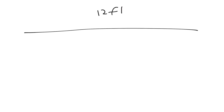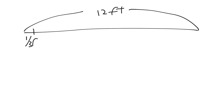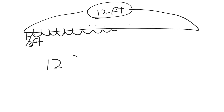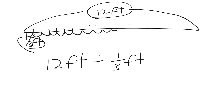From the visual side, you can see we have a 12-foot rope. And we want to divide it into one-third of a foot pieces, like so — and there will be many more. We want to know how many one-third-foot pieces there are. So to do that, we would take the 12 feet divided by one-third of a foot, and that will give us the number of pieces of rope.